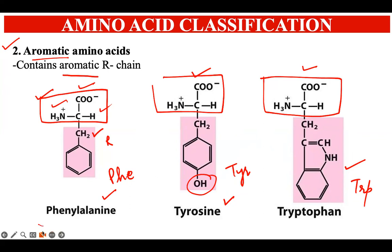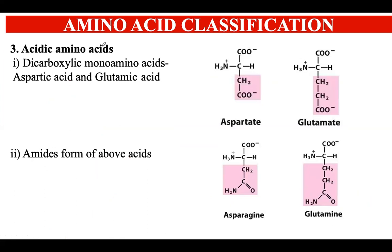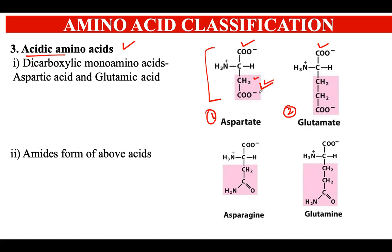The next category is acidic amino acids. This means the R group contains an extra acidic group — an additional carboxylic acid group beyond the one in the general structure. This makes the overall character of the amino acid acidic. There are two examples: aspartate, where the R group is a methyl group with a carboxylic acid attached, and glutamate, which has one more carbon in this chain compared to aspartate.